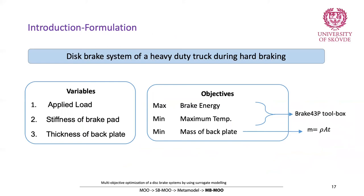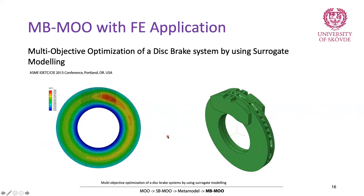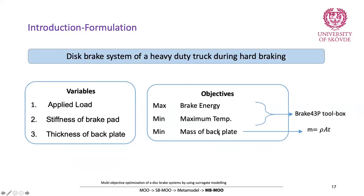We wanted to maximize the brake energy — because that's the energy that stops the truck — minimize the temperature (higher temperature causes higher wear on the disc), and minimize the mass of the backplates. The three variables were: applied load, the stiffness of the brake pad (meaning the material used in the brake pad), and the thickness of the backplate.